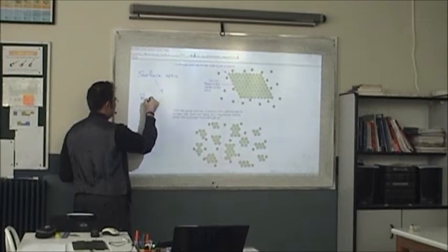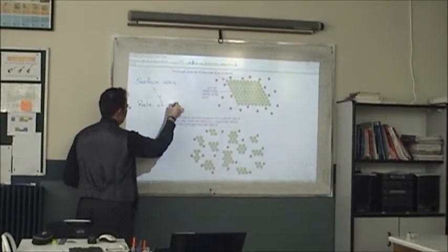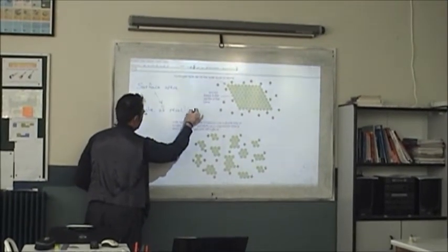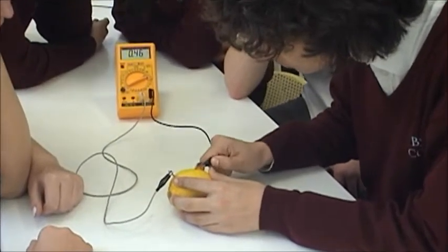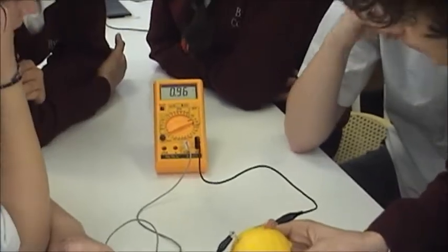Then we remembered our lesson on how a greater surface area increases the rate of reaction. What if we increased the surface area of the electrodes by using a copper coin instead of a wire? It worked. The voltage produced was slightly higher than before.